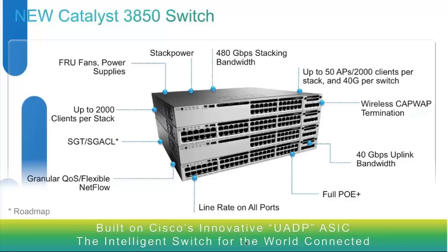Looking at the feature sets: as of today, both 24-port and 48-port, if you stack them, you can only stack four switches together. But with an upcoming release in September/October, you'll be able to stack around nine switches, giving you 480 Gbps of stacking bandwidth. For wireless capabilities, the 48-port delivers 40 Gbps of wireless throughput and the 24-port delivers 20 Gbps — the difference is due to the UADP ASICs. On a stack of 3850 switches, you can terminate around 50 access points serving up to 2,000 clients. All switches come with full PoE+ support, line-rate ports, stack power, and FRU fans and power supplies.